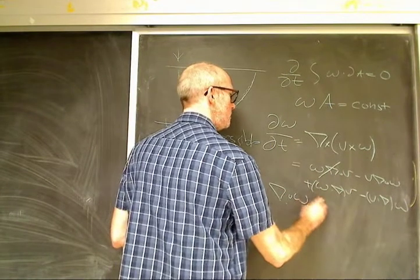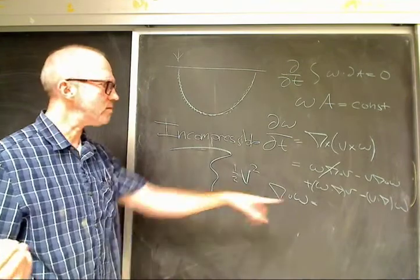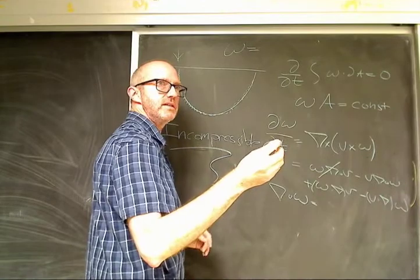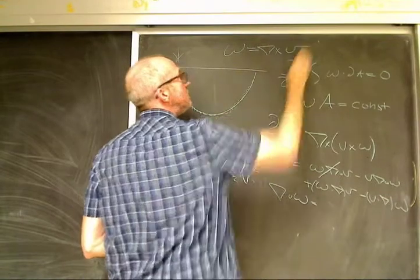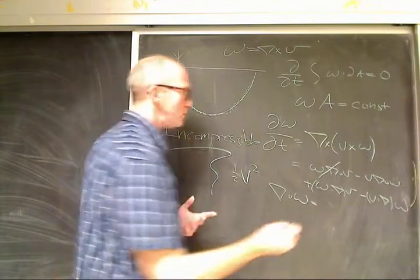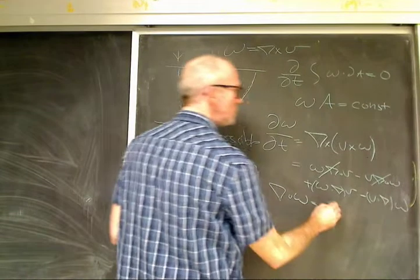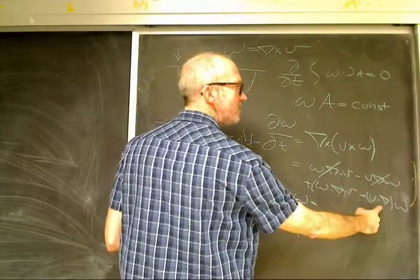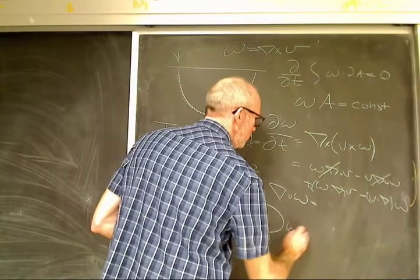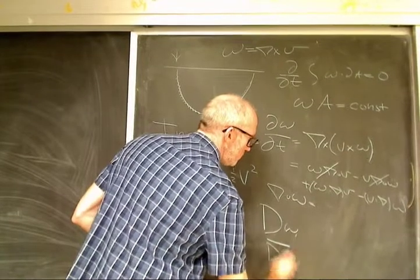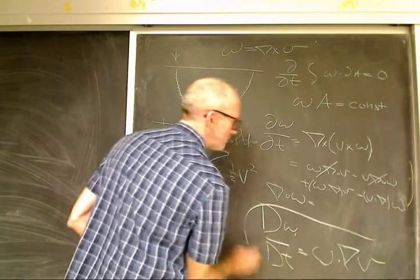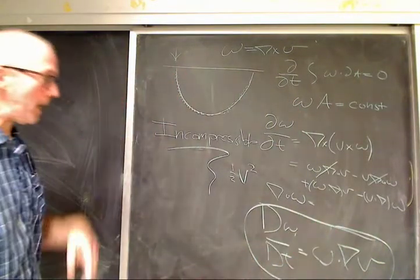Being incompressible has far-reaching consequences: div v is zero, density is constant, and the only place for energy to be is in the kinetic energy, which is just v squared. We can set density to one because it's constant. So being incompressible means the div v term goes away. And div omega — omega is curl of v, so the divergence of a curl is always zero. So div omega is zero, and we're left with just D omega/Dt equals omega dot grad v.